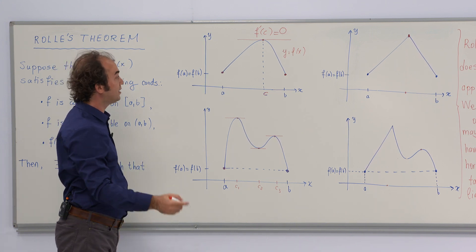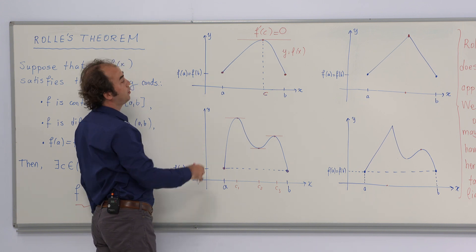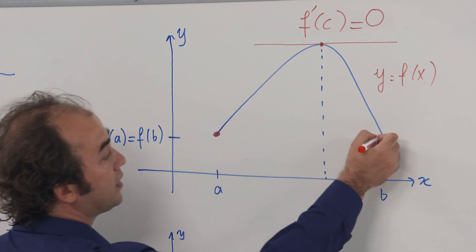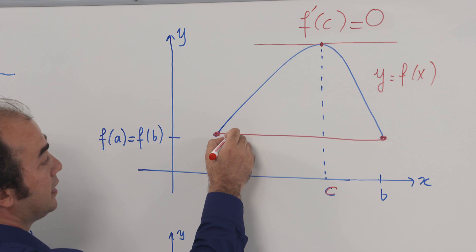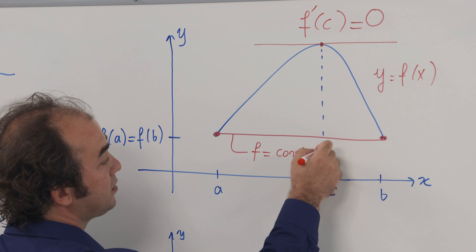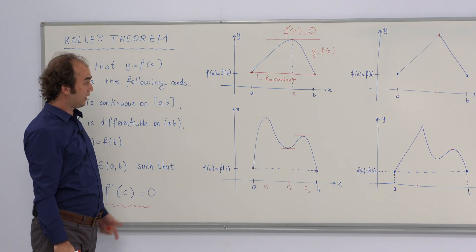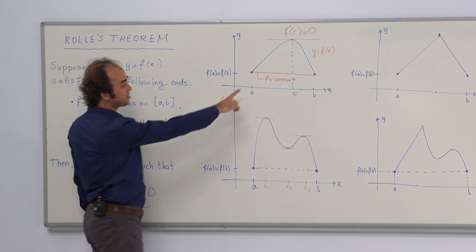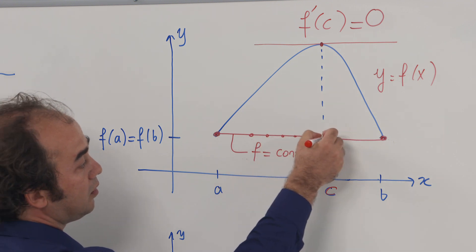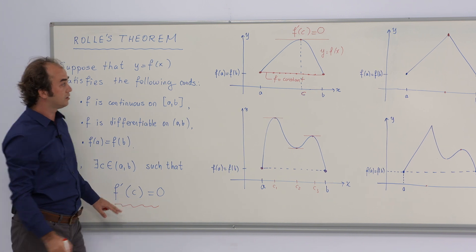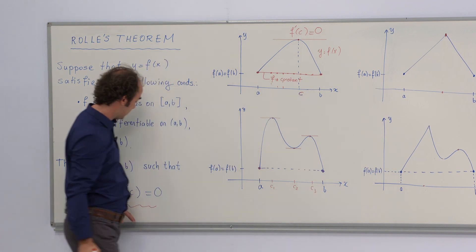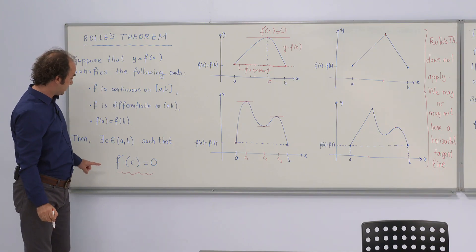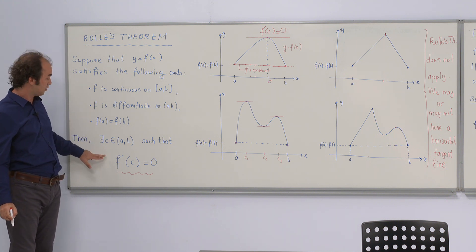Of course, there are infinitely many possibilities for drawing such a function. One possible answer — the simplest — might be drawing the straight line joining the two endpoints, which gives the constant function f equal to f of a over that interval. For this constant function, every point c over the open interval a, b satisfies the condition, since at each such point the derivative is zero — you have a horizontal tangent line. The theorem says there is at least one point c.